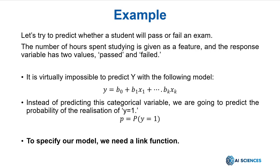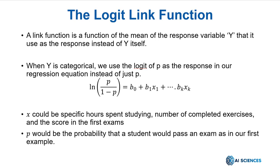Therefore, instead of predicting this categorical variable, we're going to predict the probability of the realization of y equals 1. p equals probability of y equals 1. In order to do that, we need a link function: the logit link function.